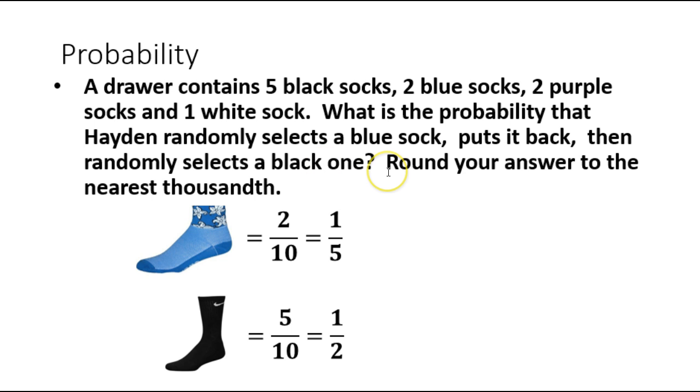Now we're trying to determine what the probability is that both of these events occurred. So when we're trying to figure out that probability what we're going to do is multiply these two together. One-fifth times one-half. Okay, so we go one-fifth times one-half that gives us one-tenth.